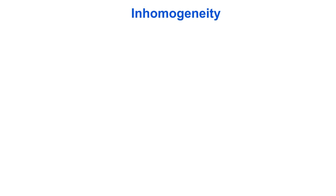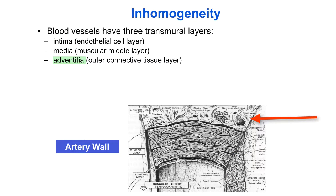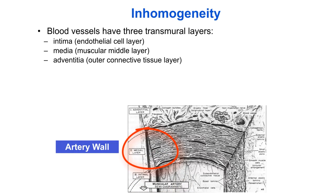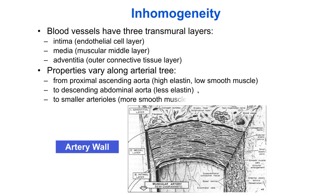Inhomogeneity means that the properties are not spatially constant — they vary from place to place. For example, blood vessels have three separate layers through their thickness: the intima, the media, and the adventitia, which all have different mechanical properties. The thin intima consists of a monolayer of endothelial cells that make a negligible contribution to tissue stiffness but have important biological functions. The media is rich in smooth muscle cells and can contract and relax dynamically. The adventitia is rich in connective tissue and provides passive stiffness and protection against excess strain. Blood vessel properties also vary considerably along the vascular tree.